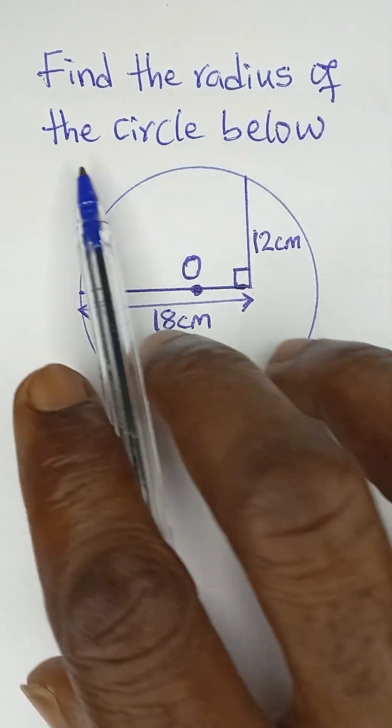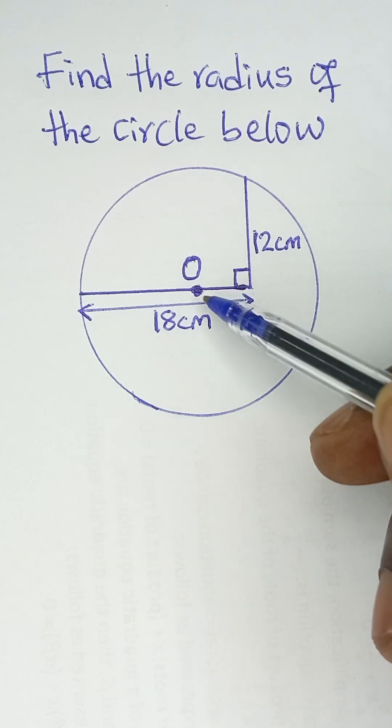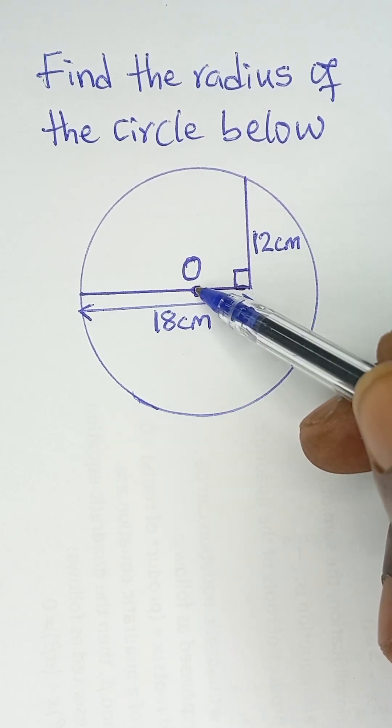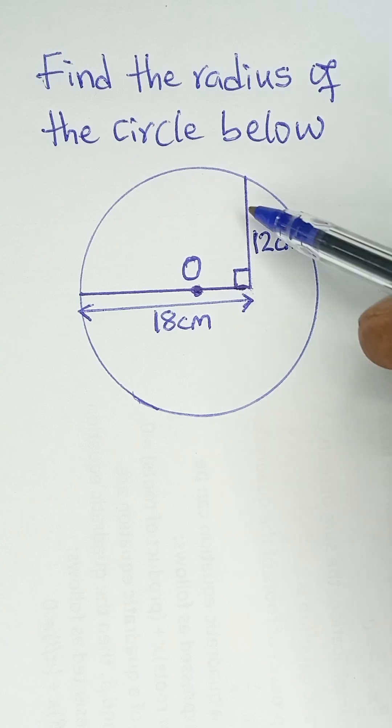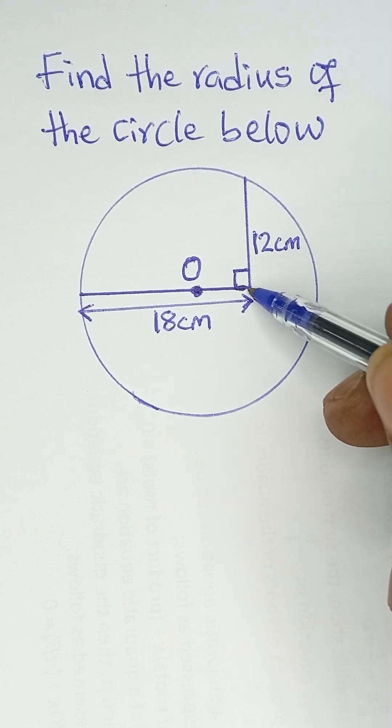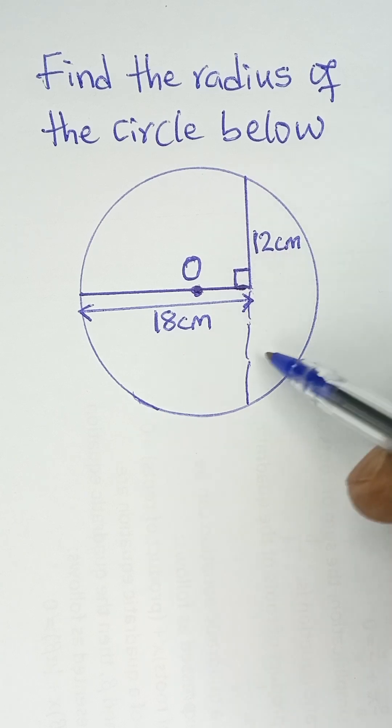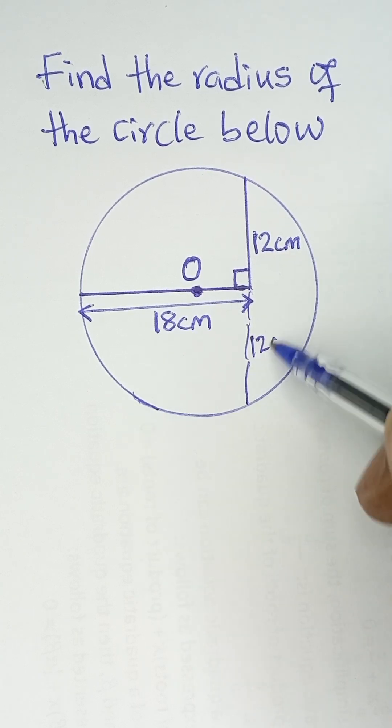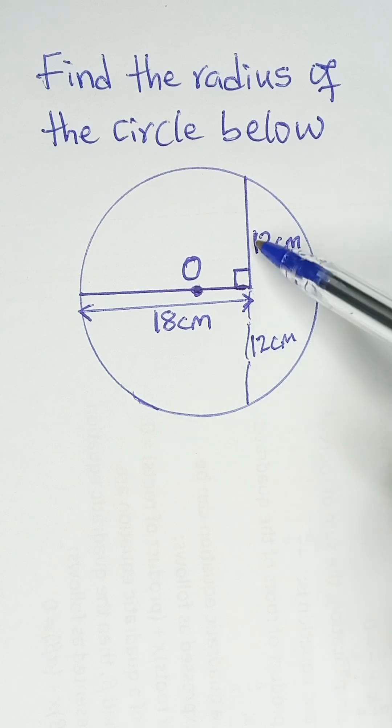Find the radius of the circle below. Now, a line drawn from the center of a circle to a chord bisects the chord. So this is a chord. If you complete it like this to this end, it means that since this is 12, this portion is also 12 centimeters because this line bisects this chord.